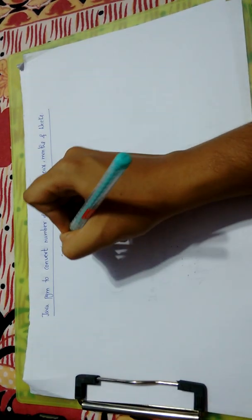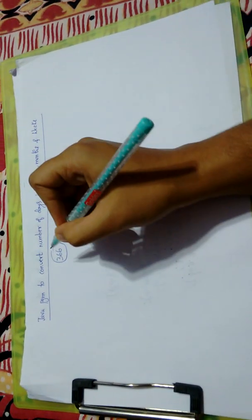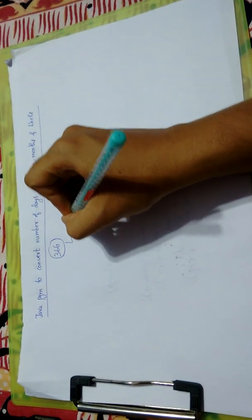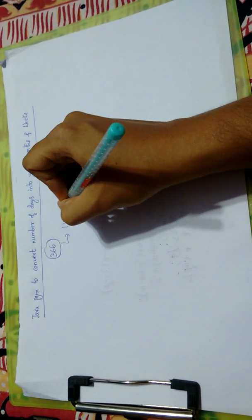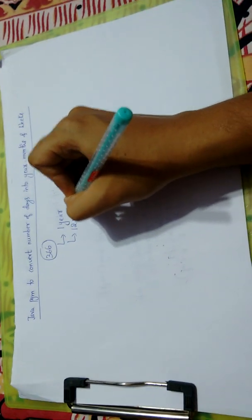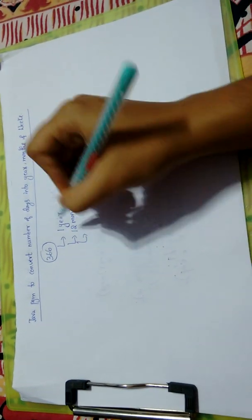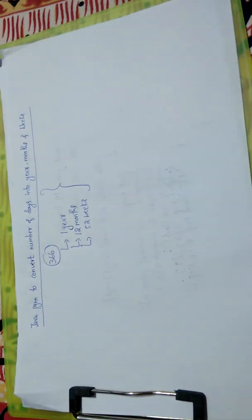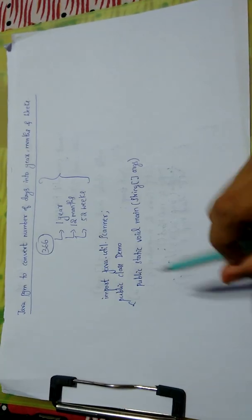You enter the days as 366. Since we have 365 days in a year, it will give you one year, 12 months, and 52 weeks as the output. For this, you will write a Java program. So let us begin to code and let us learn.